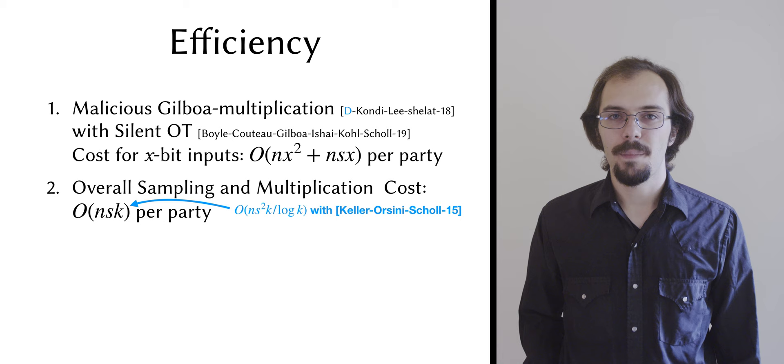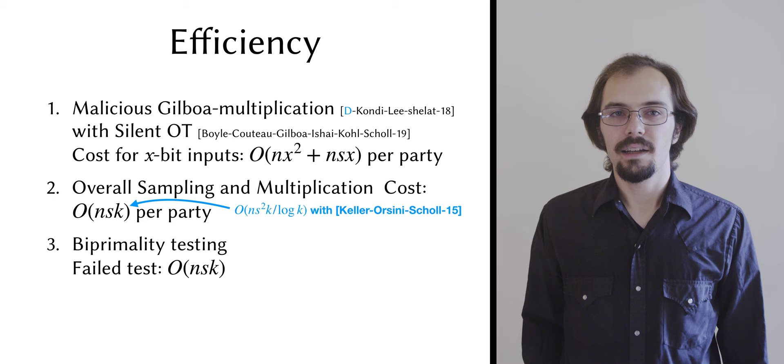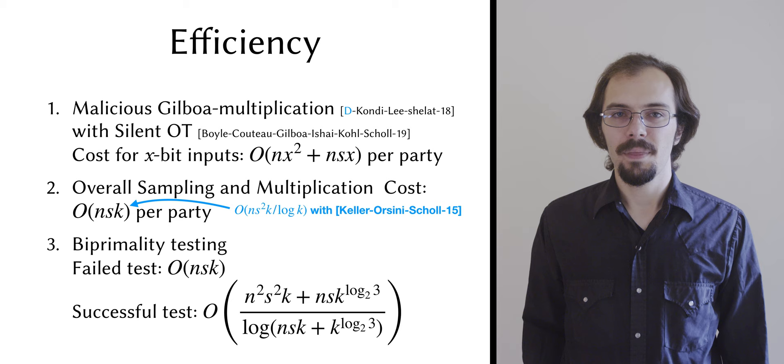Our biprimality test has different costs depending on whether it reports a failure or a success. In failed instances, it also costs an O of nsk in terms of communication. But in successful instances, where it determines that n is a biprime, it costs in this term, which you don't need to worry about because it will be consumed by something else later.